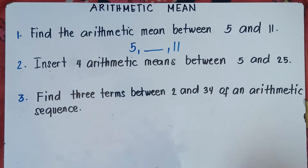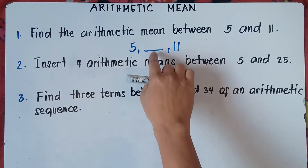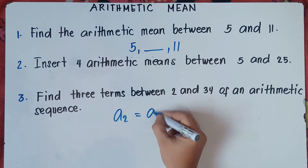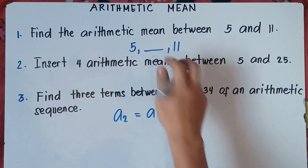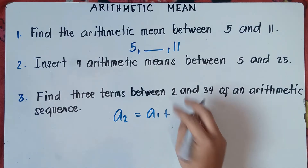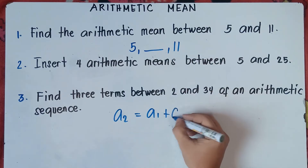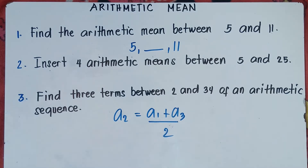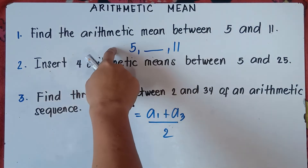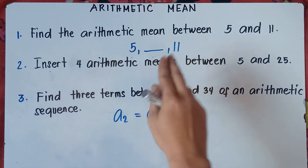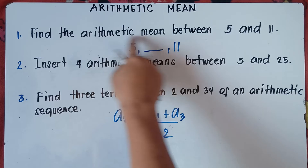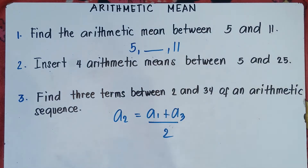Mean means the average. So the formula to get this number: the second term equals the first term plus the last term, divided by 2. If you're looking for the arithmetic mean between two numbers, simply add the numbers and then divide it by 2.